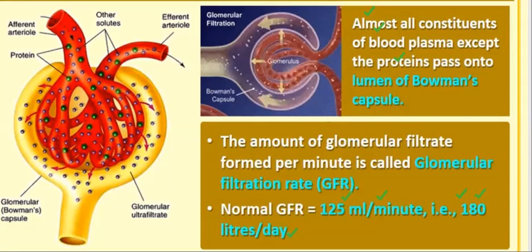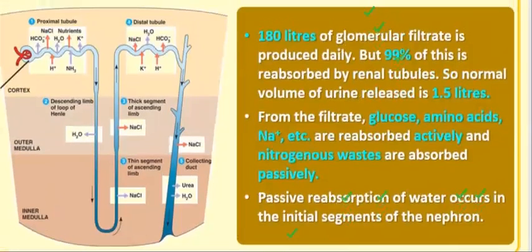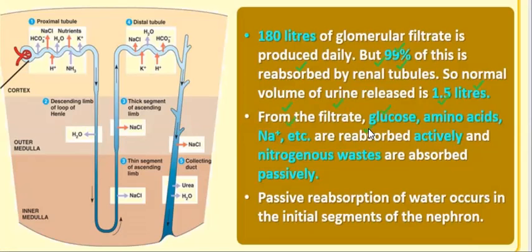The next step is reabsorption. Although 180 liters of glomerular filtrate is produced daily, 99% of this is reabsorbed by the renal tubules, so the normal volume of urine released is only 1.5 liters. As land animals, our physiology conserves water. From the filtrate, glucose, amino acids, and sodium are reabsorbed actively.